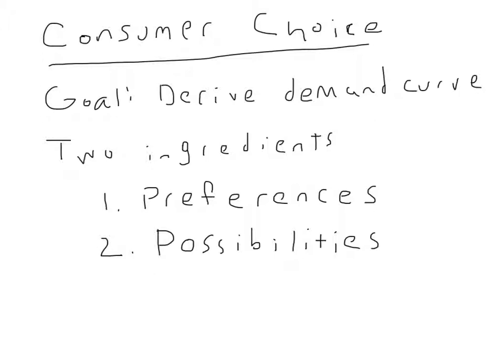So in summary, the two questions we're going to ask today are: what does he prefer? Can we rank his preferences? And then second, what is it actually possible for him to consume?